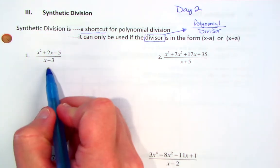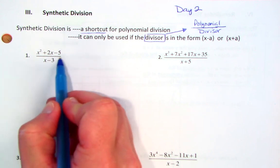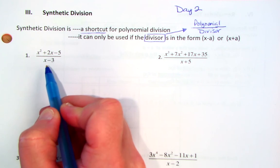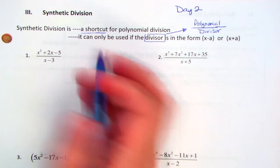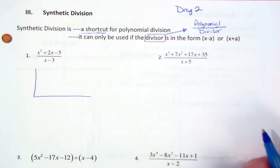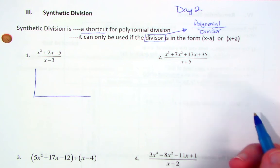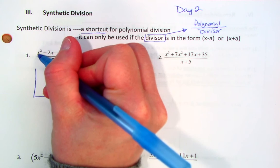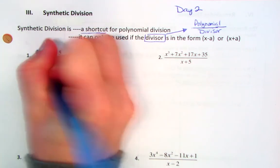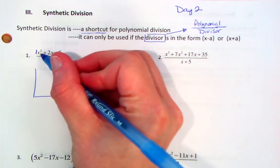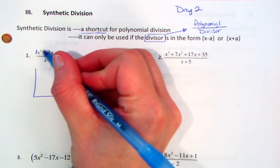So in this case, we have a divisor of x minus 3, so we can use synthetic division. How people set it up can be a little different. I'm going to draw what looks like an L shape or part of a box. To do synthetic division, we copy down the coefficients of the polynomial we're dividing — that's our top row. If there's no number in front of x squared, that number is a 1.